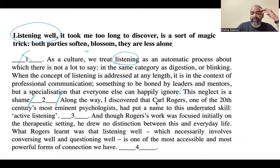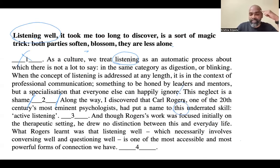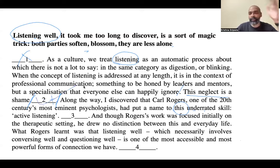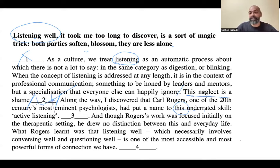At blank two: 'Along the way I discovered that Carl Rogers, one of the 20th century's most eminent psychologists, had put a name to this underrated skill.' If there's nothing in the blank, the previous sentence is 'This neglect is a shame' — which is negative. 'This underrated skill' has to refer to something positive. So 'listening well' must go here. The answer to question one is option two. Watch out for the tones of sentences — they'll help a lot.